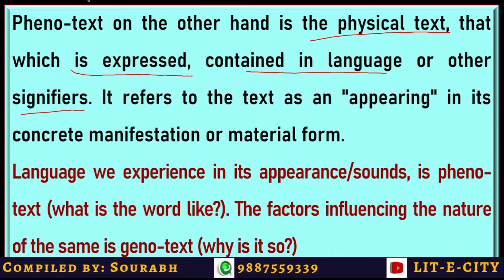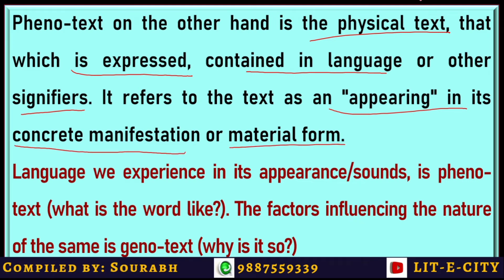Phenotext refers to text as it appears in its concrete manifestation or material form. Whether it is a movie on the screen, or the text on the page — language as we experience it in its appearance and sound — that is the Phenotext. For example, what a word looks like and what it basically means is the Phenotext. However, Genotext is the genus — it is the factor that influences the particular nature of the Phenotext.